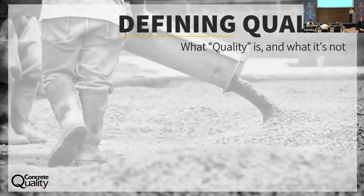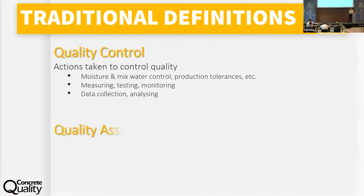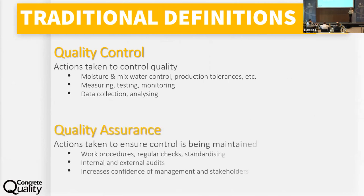We start by defining what quality is — what it is and what it's not — so we don't leave any gaps in the understanding. The traditional definition: quality control is the actions you take to control quality — you measure things, you test, you monitor, you collect data. Then there's quality assurance, QA/QC — those actions that ensure you keep control, like work procedures, checklists, the quality management system, ISO, etc. These are the traditional definitions.